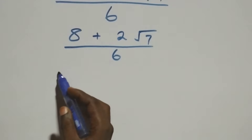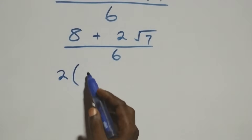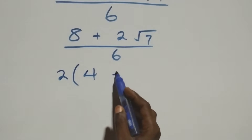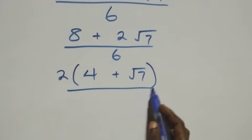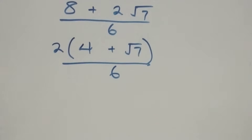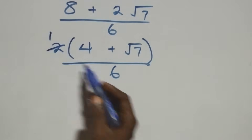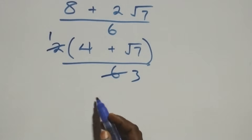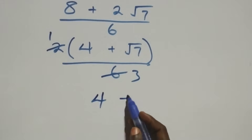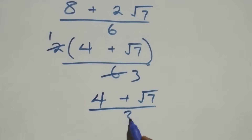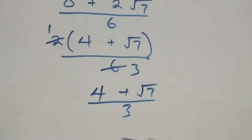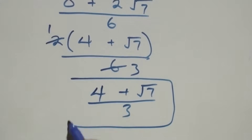In the numerator, 2 is a common factor, so we factor it out: 2 times (4 + √7), all over 6. The 2 and 6 simplify — 2 goes into 2 once and into 6 three times — giving us (4 + √7) over 3. So the simplified form from the first method is (4 + √7)/3.